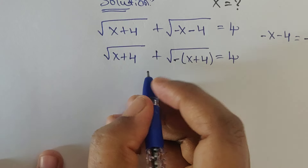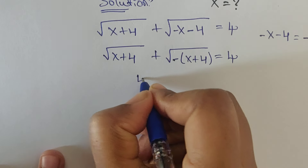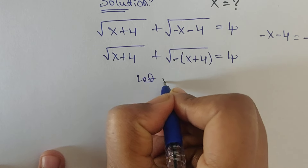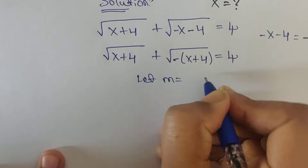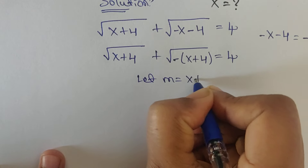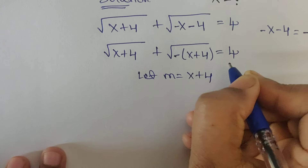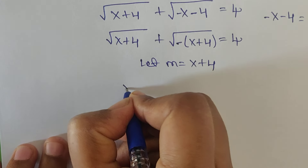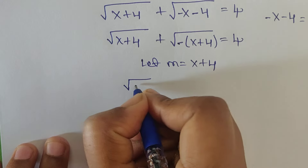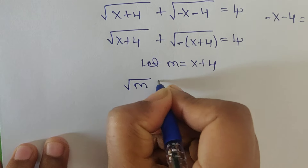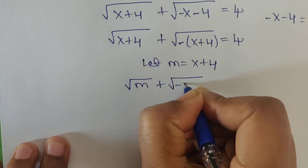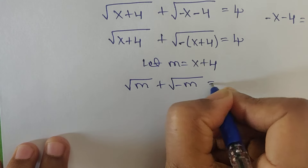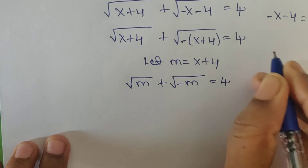Now let us consider m equal to x plus 4. So in place of x plus 4 we will write m. The equation becomes square root of m plus square root of minus m equal to 4.